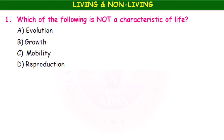First question: which of the following is NOT a characteristic of living things — evolution, growth, mobility, or reproduction? Evolution is a characteristic of living beings, growth is a characteristic of living beings, and reproduction is a characteristic feature. Mobility means movement — it is a common thing. A non-living thing also moves when air blows a paper, but paper is non-living. So the answer is C — mobility.